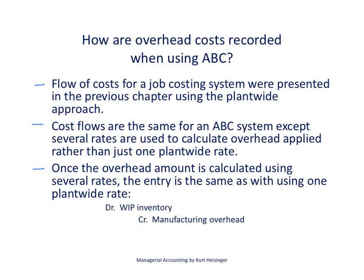How are overhead costs recorded when using activity-based costing? It's important to understand that the flow of costs for a job costing system is the same whether we're using a plant-wide approach, a departmental approach, or activity-based costing for allocating overhead — the costs flow through all the same accounts. The difference is that with activity-based costing we're using several different rates instead of just one plant-wide rate or a few departmental rates. We have a rate for each activity when using activity-based costing.